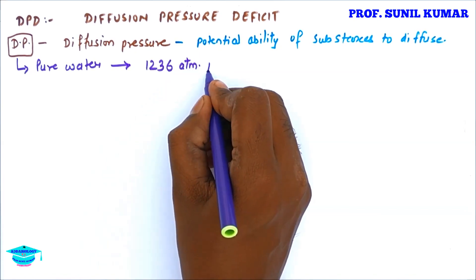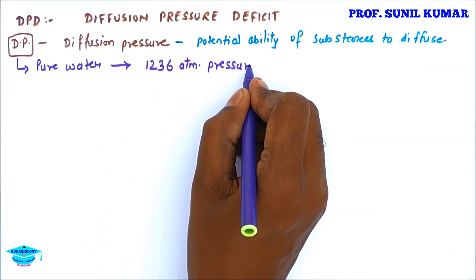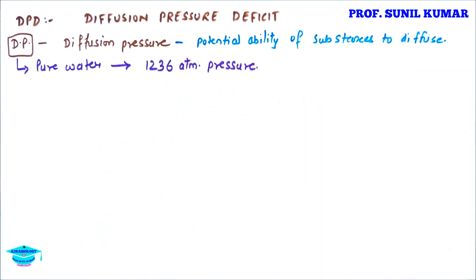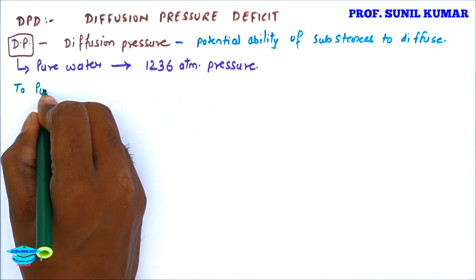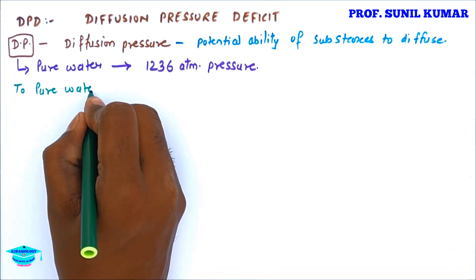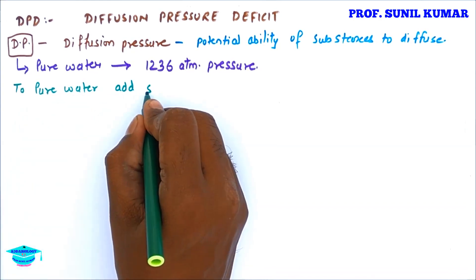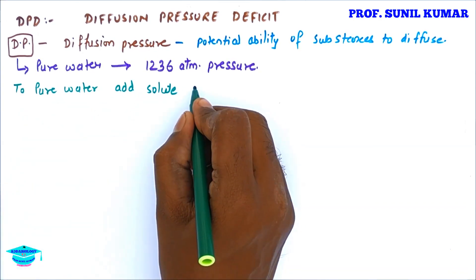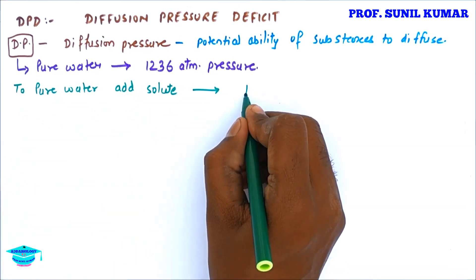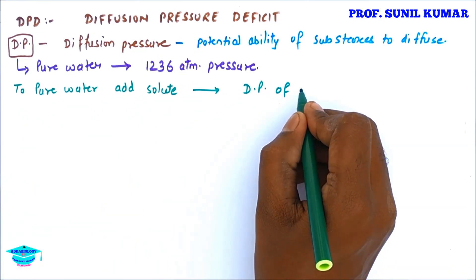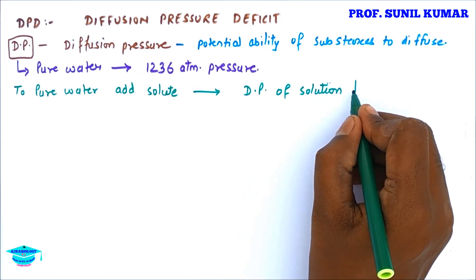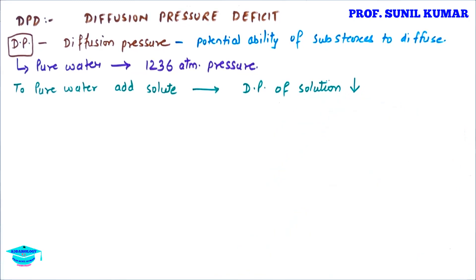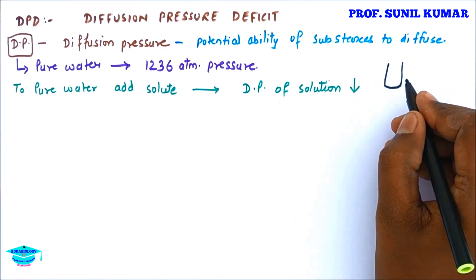When we talk about pure water, the diffusion pressure of pure water is 1236 atmospheric pressure. If we add solute to this pure water, it simply means the ability of this solution to diffuse will now decrease, as it has solute present in it.